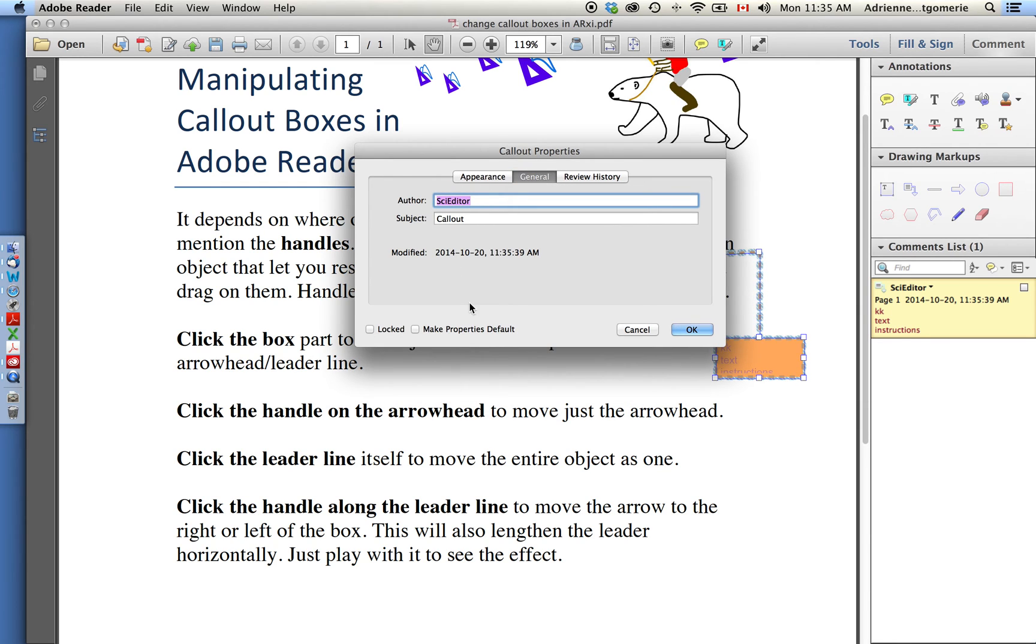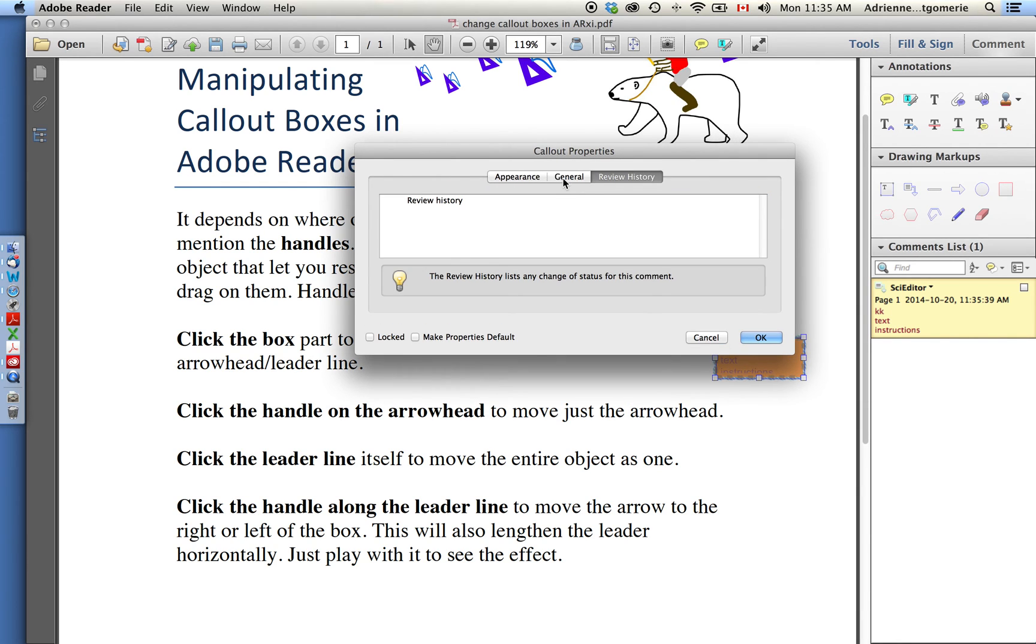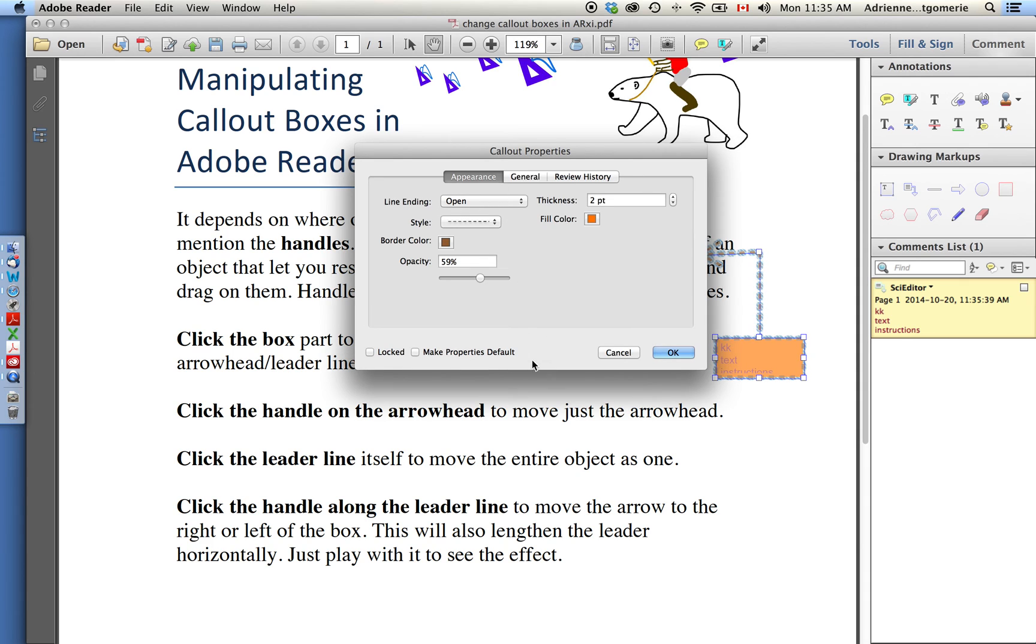This is also where you would change your author name and look at histories and so forth. So explore that properties bar. You can also make this the default for all future callout boxes so you don't have to change this every time. I'm not going to do that in this instance.